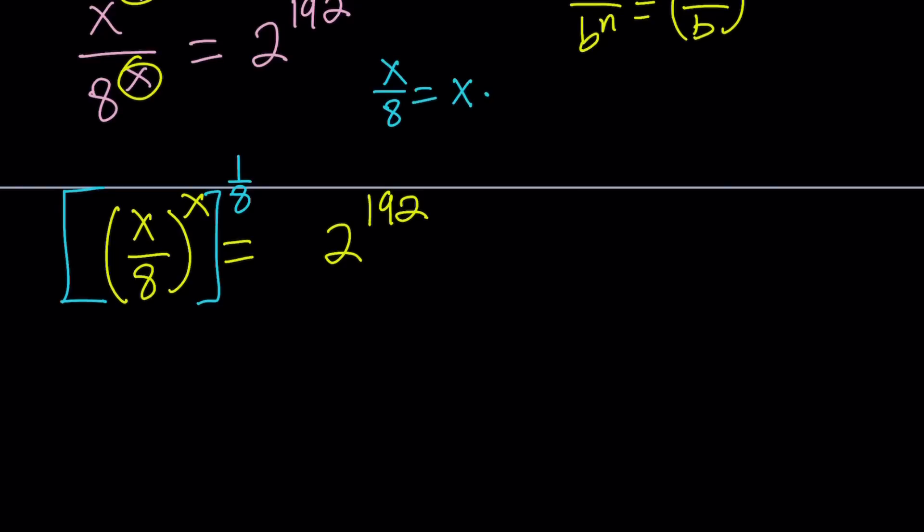Because x times 1 over 8 is the same as x over 8. Dividing by a number is equivalent to multiplying by its reciprocal. So now we're going to raise both sides to the power 1 over 8.